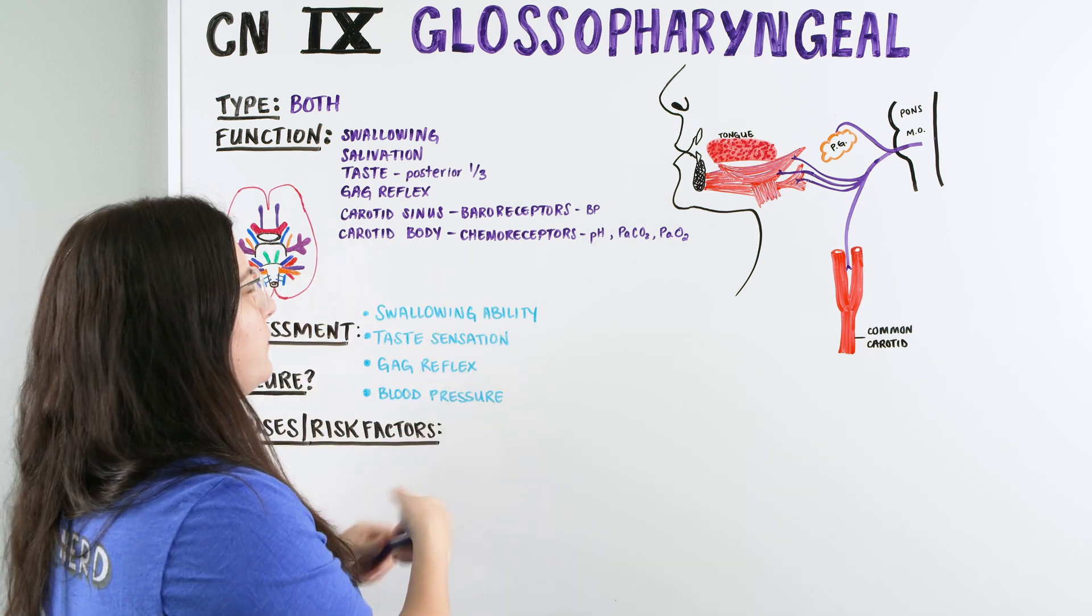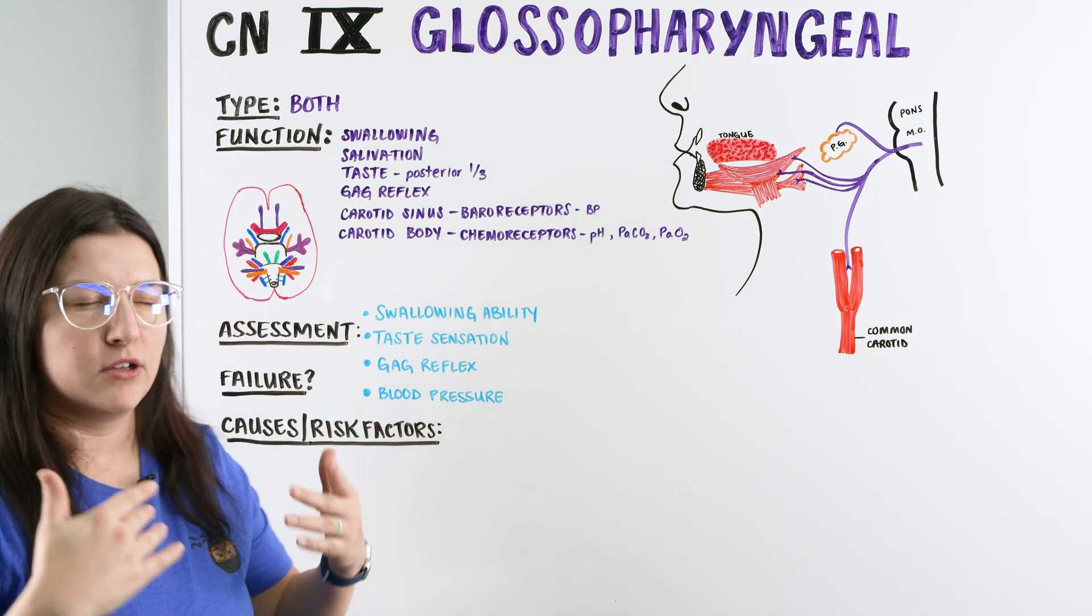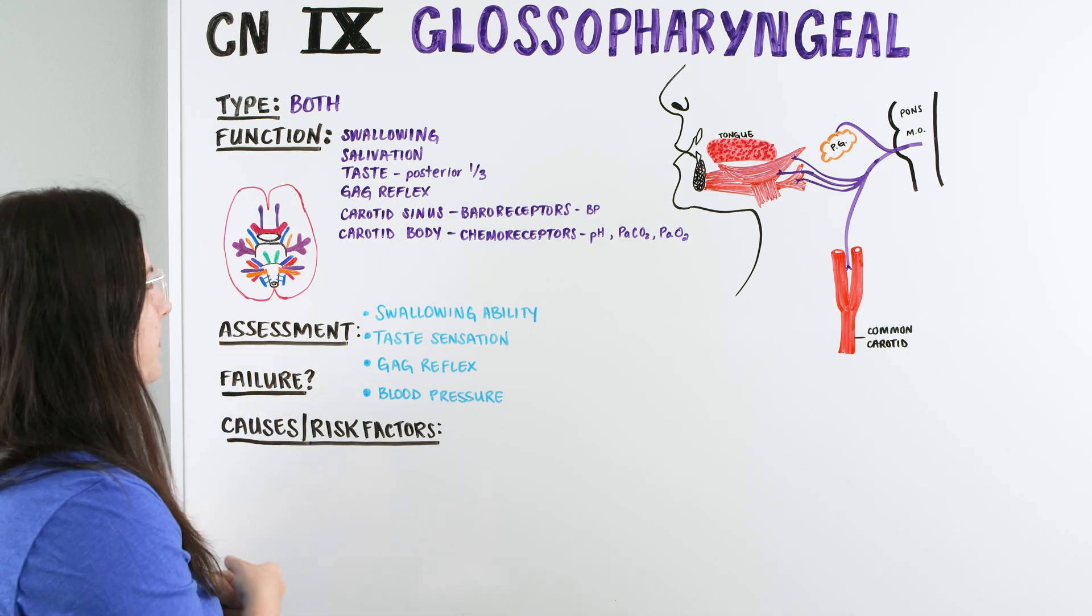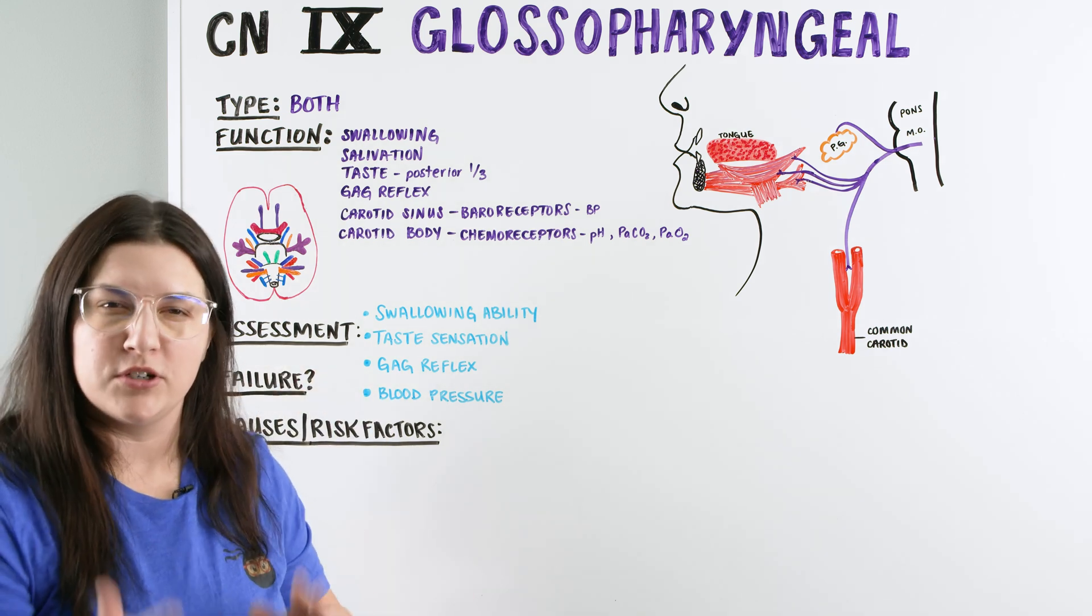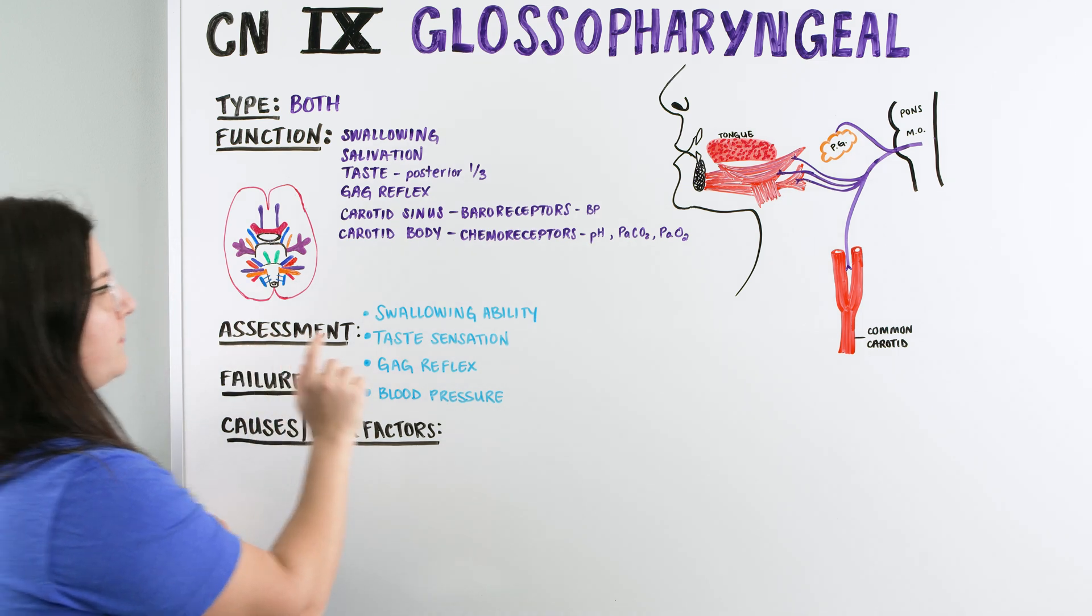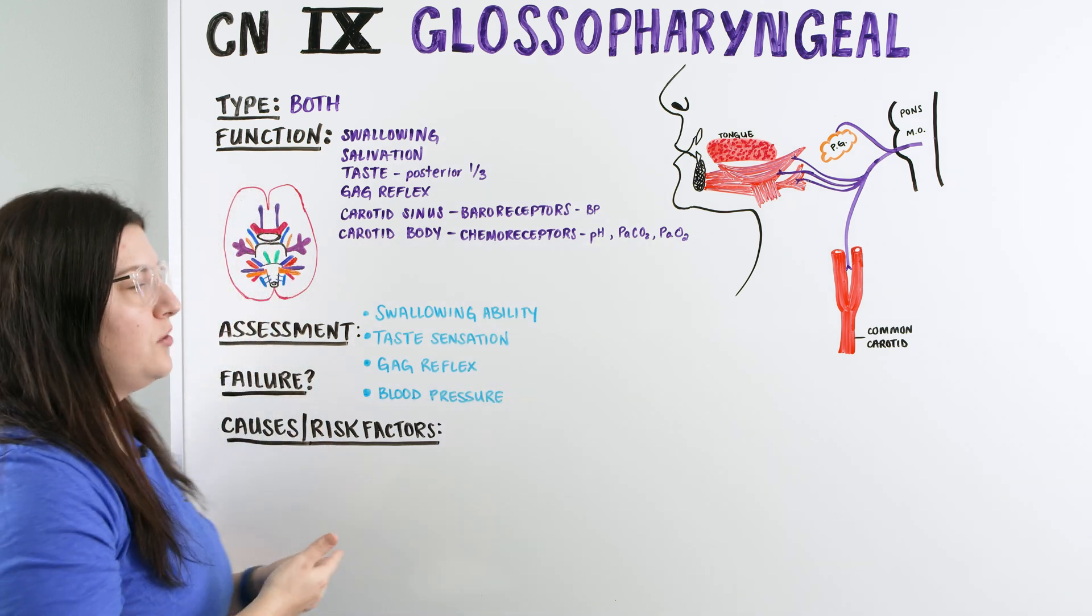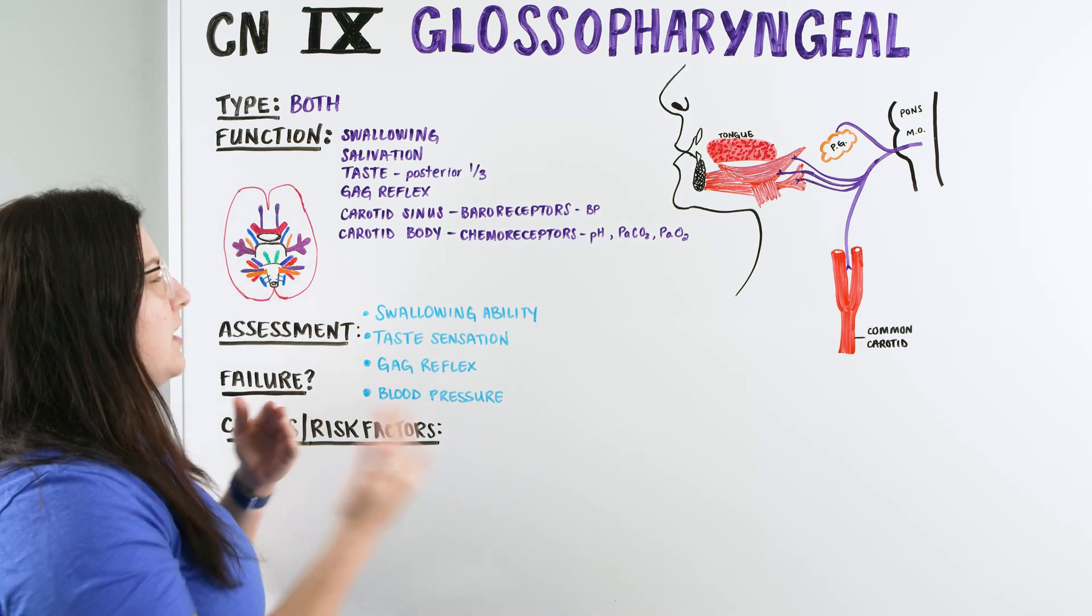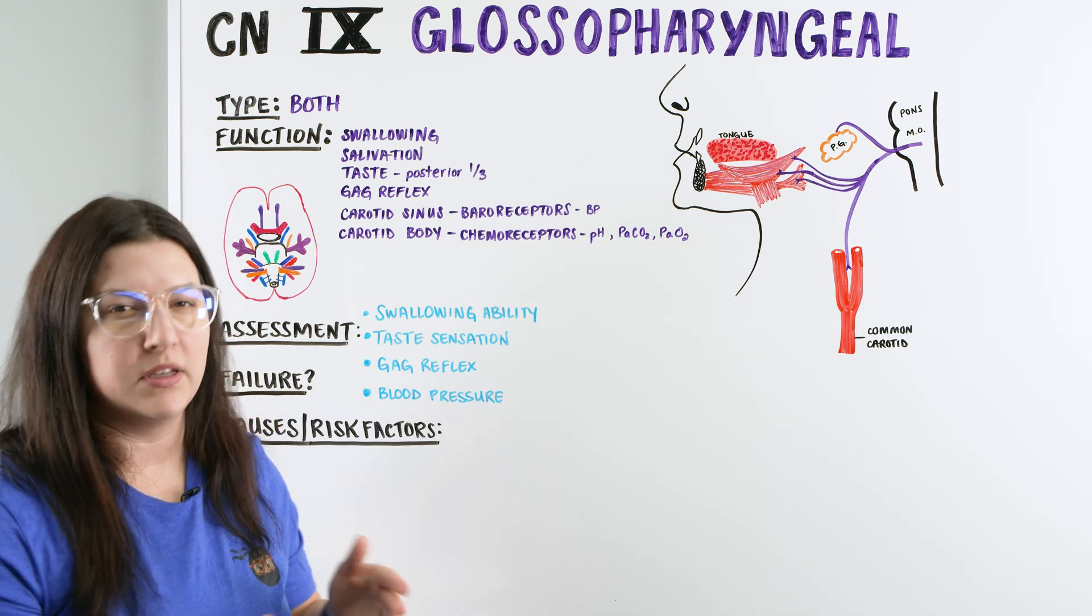To test the glossopharyngeal, there's a couple different things that we're going to assess or look at to see if there is intact glossopharyngeal or if that nerve is good and we can move on to the next nerve in our assessment. There's a couple different ones we can do here, but there is one that's typically the gold standard. So with the assessment, the first thing we can do is the swallowing ability. The swallowing ability is when you watch the patient swallow or ask them, are you having any trouble swallowing? And if that answer is yes, you can further go on to have them have a swallow study completed.